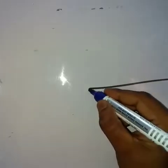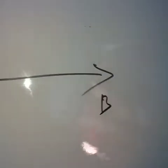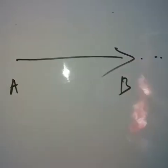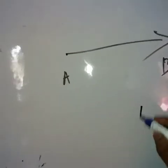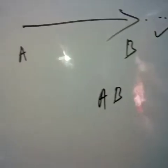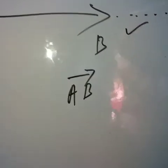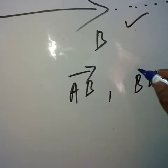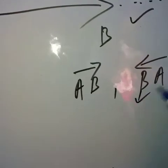The next topic is Ray. What do you mean by a Ray? A Ray is also a type of line. We can extend it in only one direction and it has one end point. We write a Ray in the form of AB or BA, extended in only one direction.